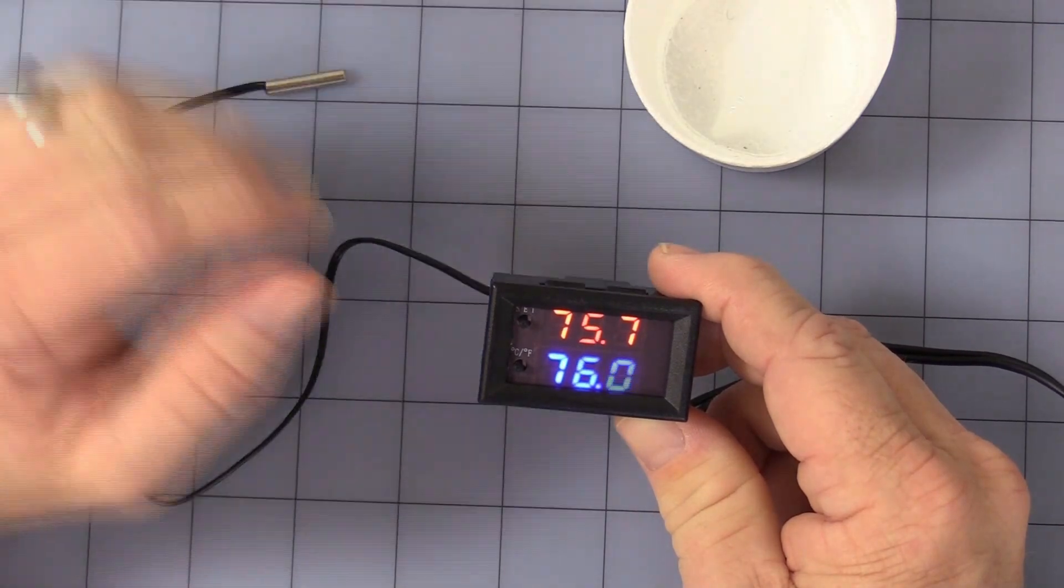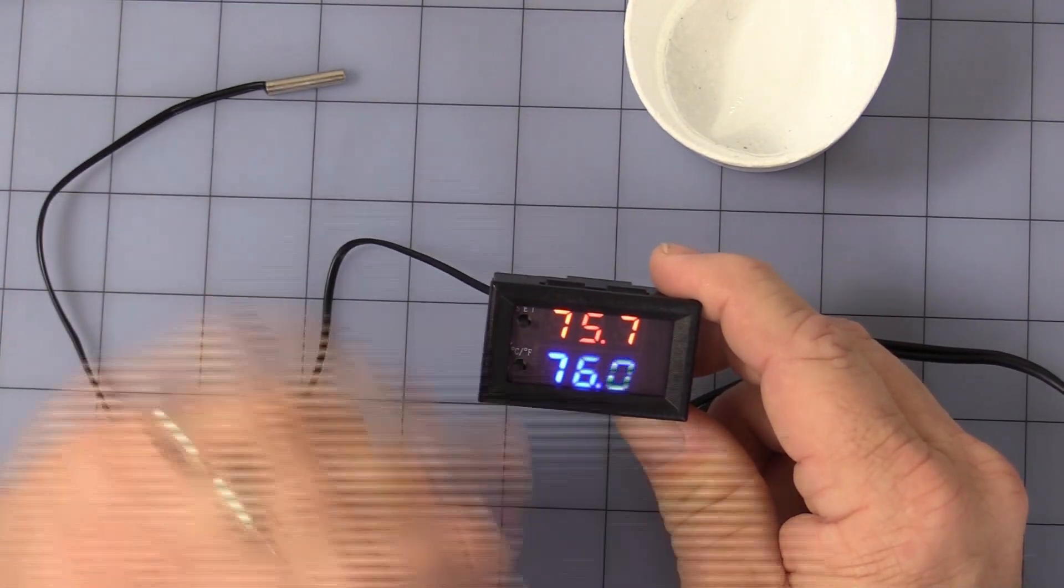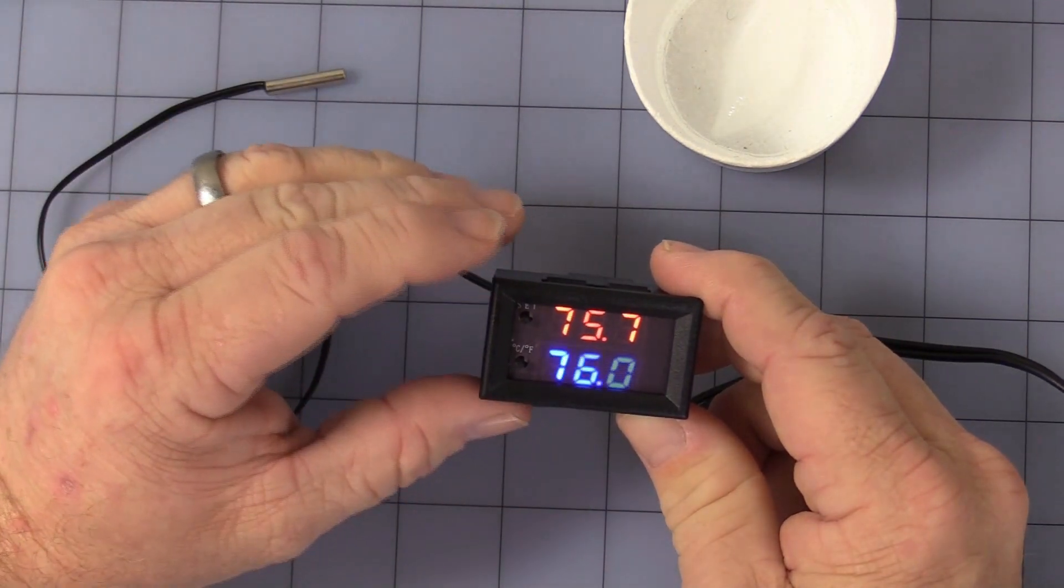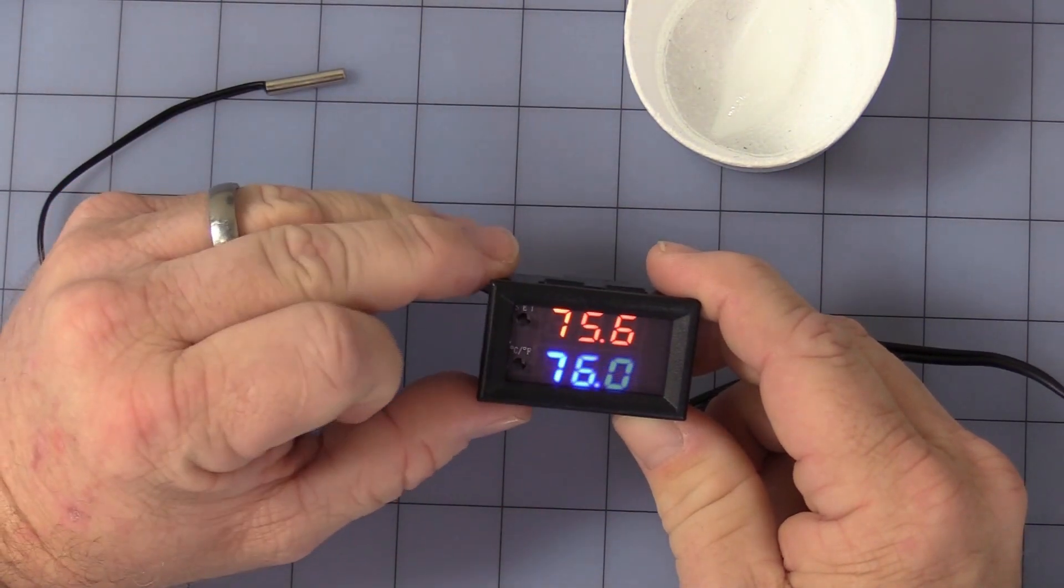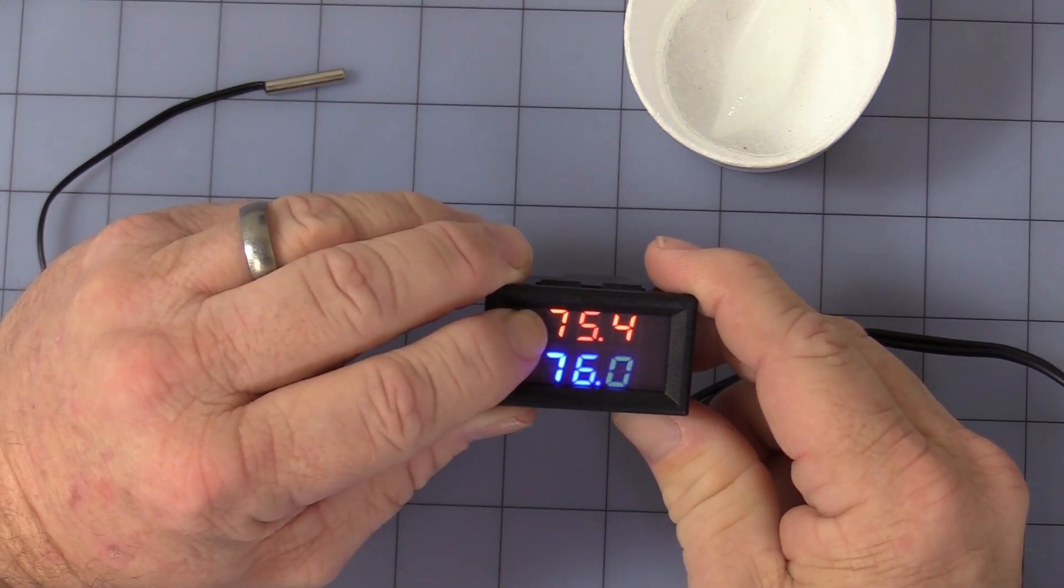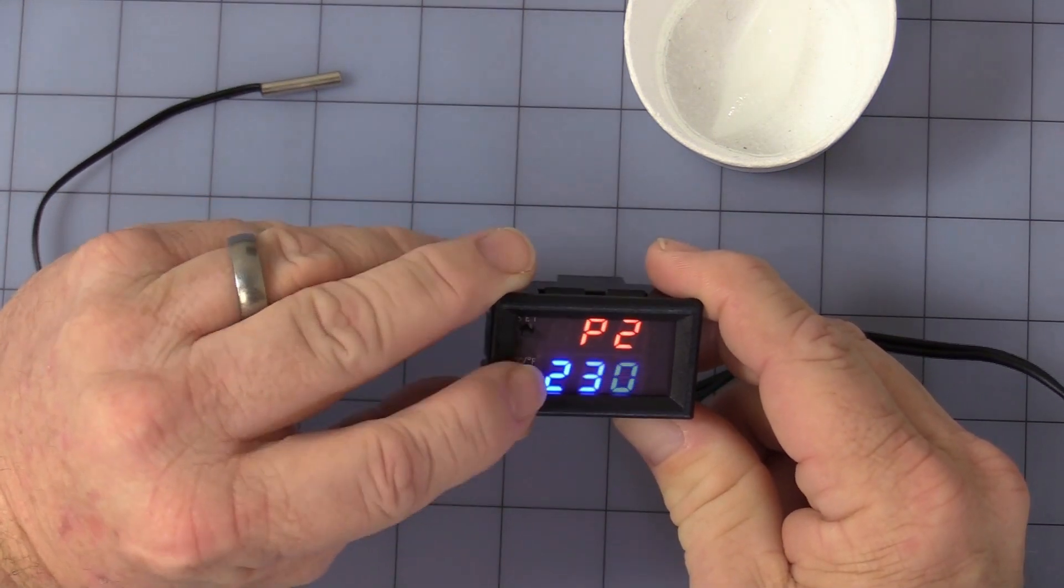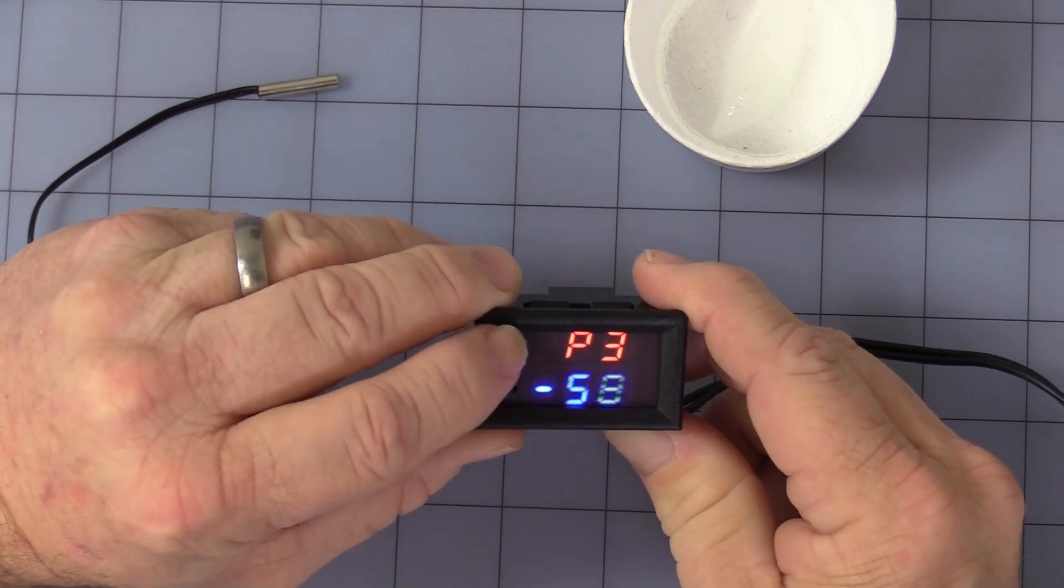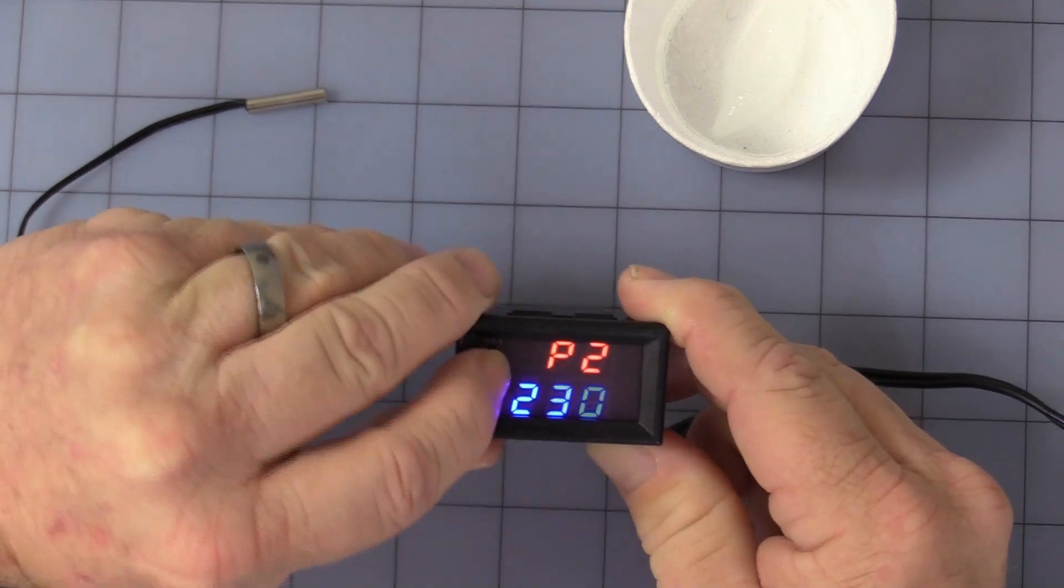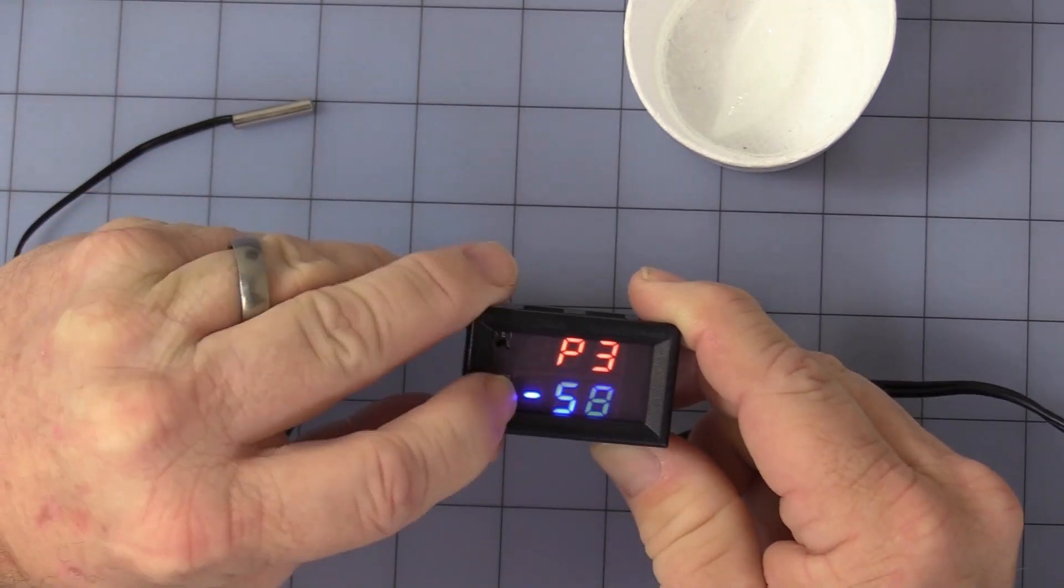Now, we get into P2, which is just a kind of a safety feature. It's a high set limit. So, no one can accidentally adjust the temperature too high on you while you're running the program here. So, you press and hold. Go to P2. You can see factory sets 230 degrees Fahrenheit.